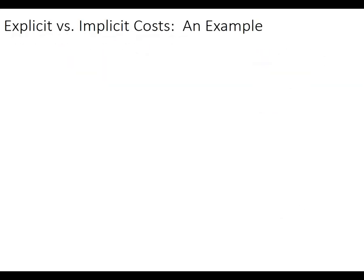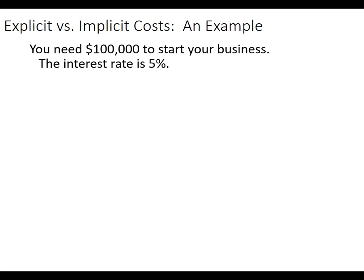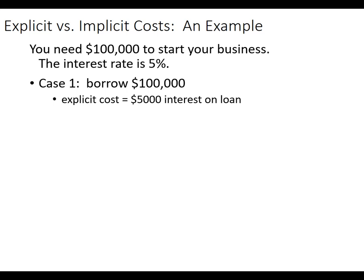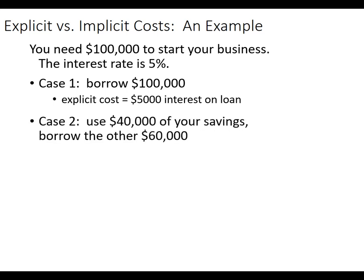Let's do an example — explicit versus implicit costs. Say an entrepreneur has $100,000 to start their business and the interest rate is 5%. You could borrow the whole $100,000, and you'd have an explicit cost: the 5% interest you need to pay on the loan. Or you could use $40,000 of your own savings and borrow the other $60,000.